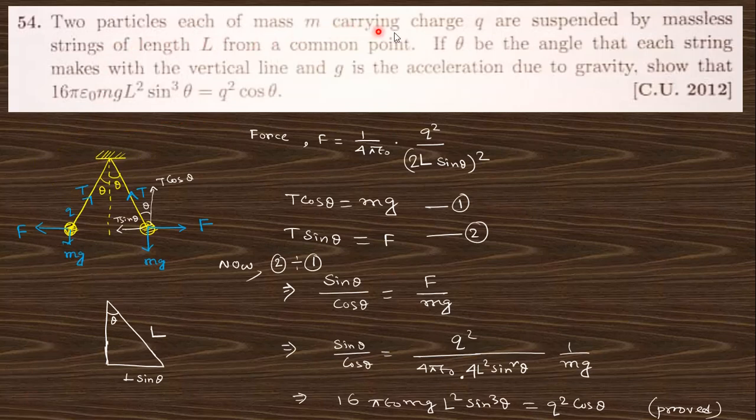Next question: Two particles each of mass m carrying charge q are suspended by massless strings of length L from a common point. If θ is the angle each string makes with the vertical, and g is the acceleration due to gravity, show that 16ε₀mgL²sin²θ = q²cos θ. Here the force between these two charged particles will be this. Since this is L and angle θ, this distance will be L sin θ, so total distance will be 2L sin θ.